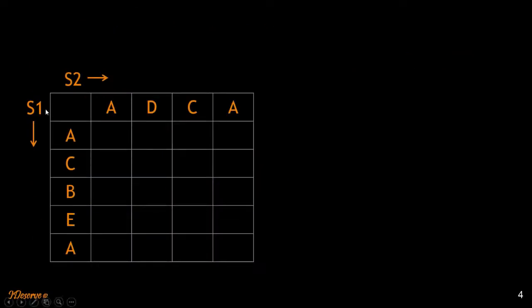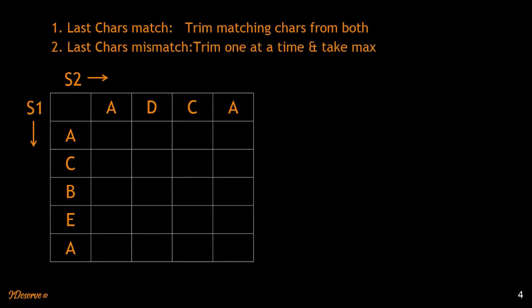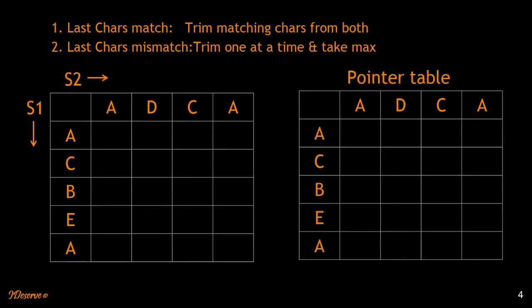In the DP approach, we have a matrix where S1 represents the rows and S2 represents the columns. We match character by character and count the number of characters that match. Eventually we will get the length of the longest common subsequence at the bottom of the matrix. We follow the same rules: if the last characters match, trim both and use the LCS of the trimmed strings; if they don't match, trim one character at a time and take the maximum. We also have a pointer table to track our movement and use those pointers to generate the LCS string.